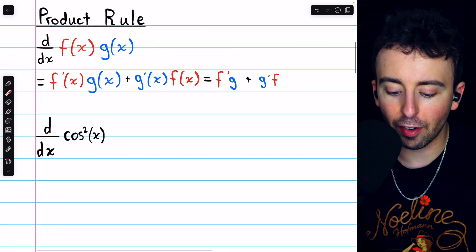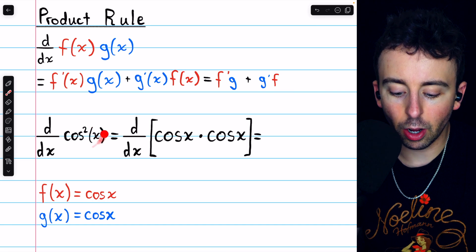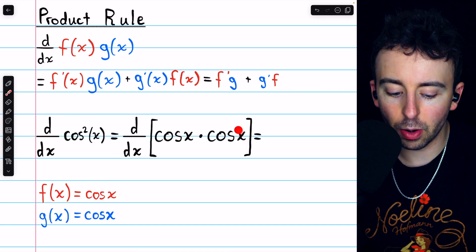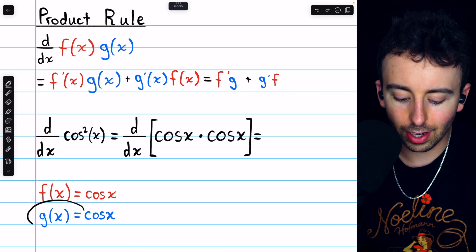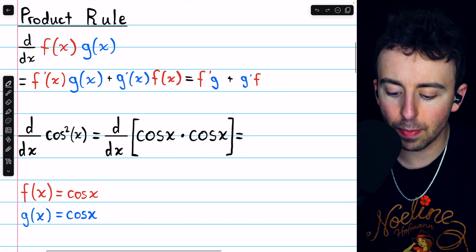I've written the product rule here for your reference: f prime g plus g prime f. In our case, rewriting cosine squared as cosine times cosine, it's clear that f is cosine and g is cosine, so applying the product rule should be pretty easy.